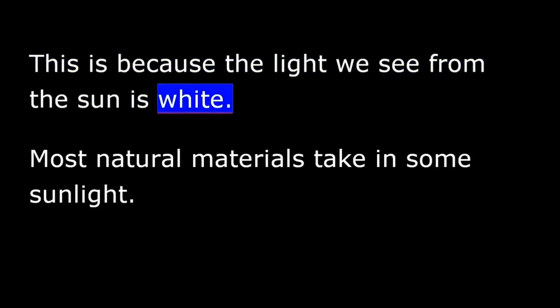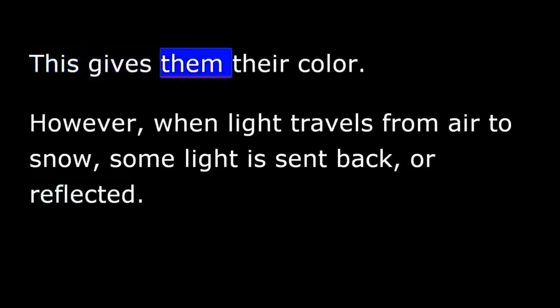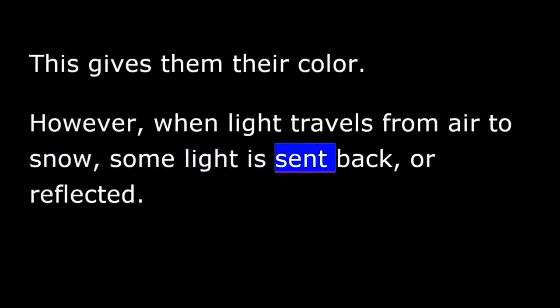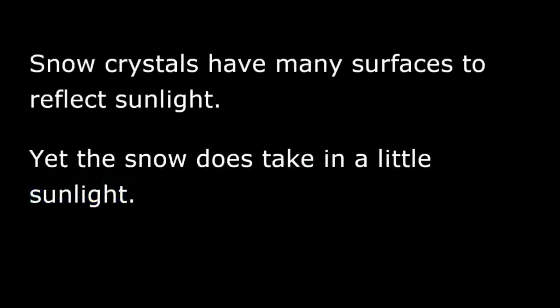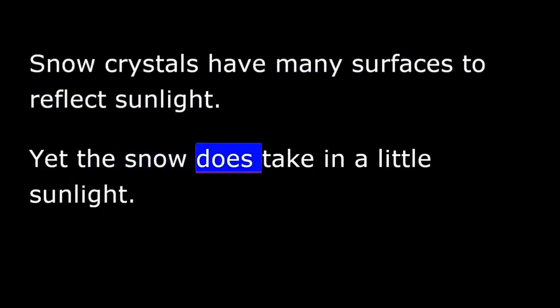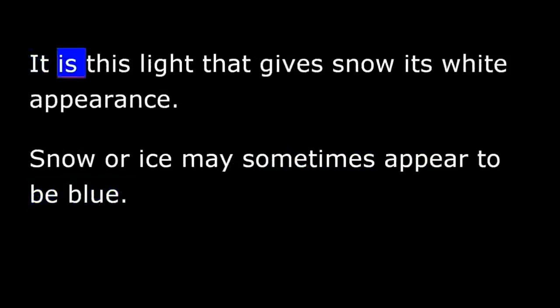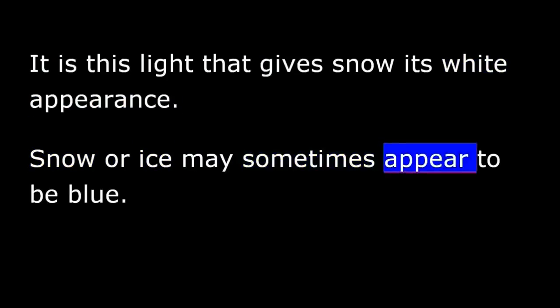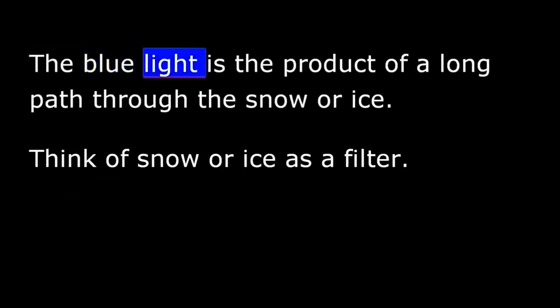Generally, snow and ice appear white. This is because the light we see from the sun is white. Most natural materials take in some sunlight, which gives them their color. However, when light travels from air to snow, some light is sent back or reflected. Snow crystals have many surfaces to reflect sunlight. Yet the snow does take in a little sunlight — it is this light that gives snow its white appearance. Snow or ice may sometimes appear to be blue. The blue light is the product of a long path through the snow or ice.